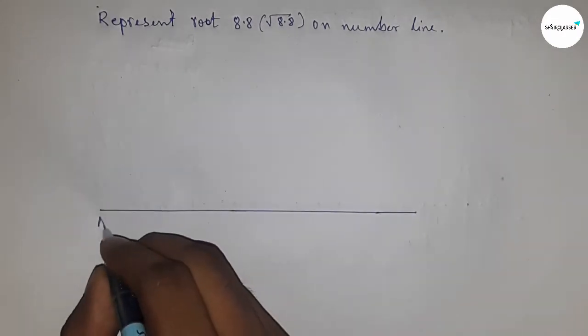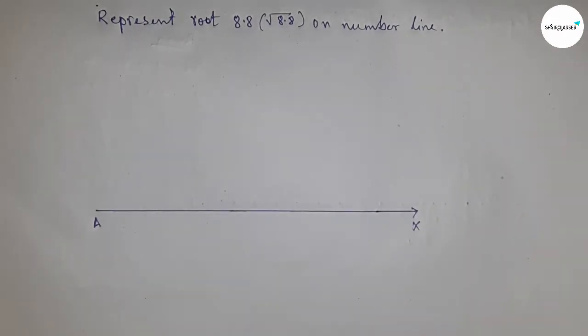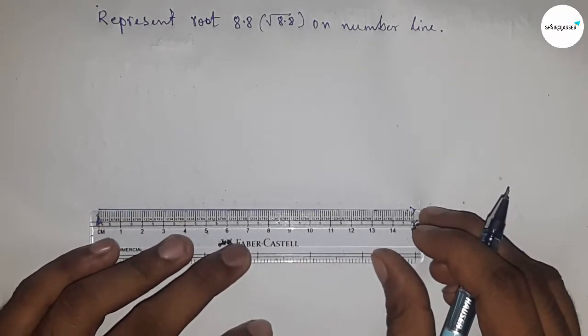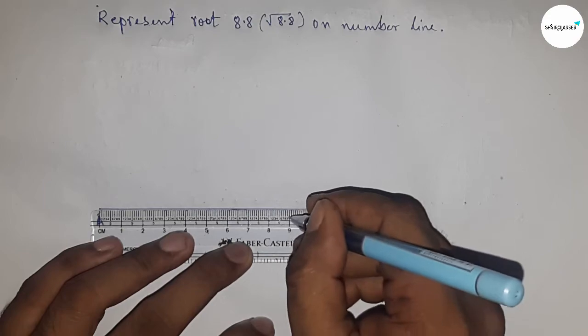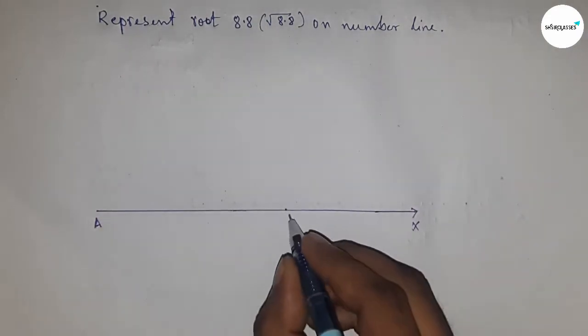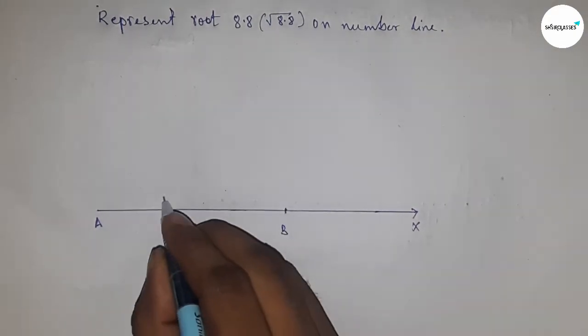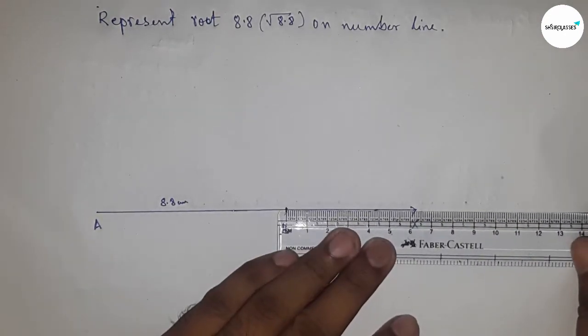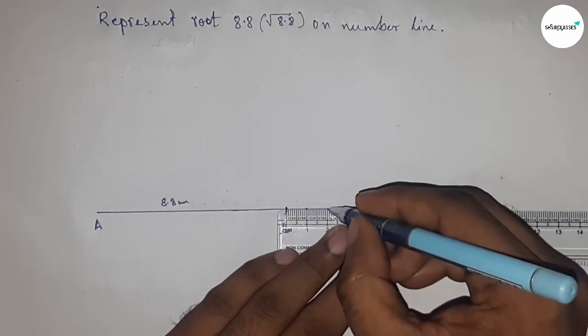This is 8.8 centimeters. Mark this as point B, so AB equals 8.8 centimeters. Next, mark the numbers on the line from B to X using a scale.